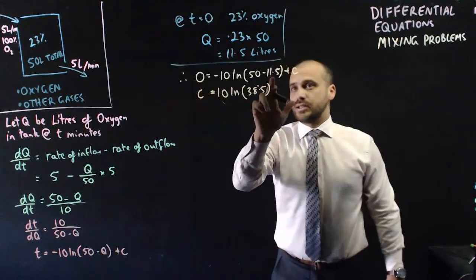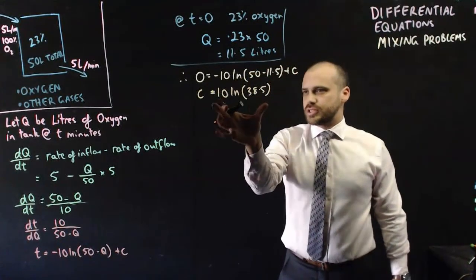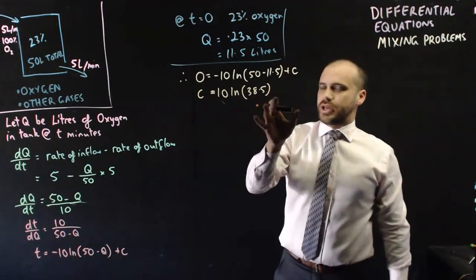So, subbing 0 and 11.5 into our equation, we can solve for C, which is 10 ln(38.5).